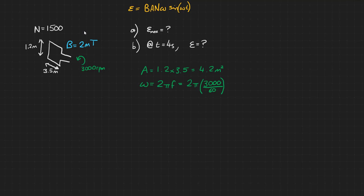And our angular frequency ω is equal to 2πf where f here is 3000 revolutions per minute divided by 60 to get it into revolutions per second or hertz. And that gives us 314 radians per second.